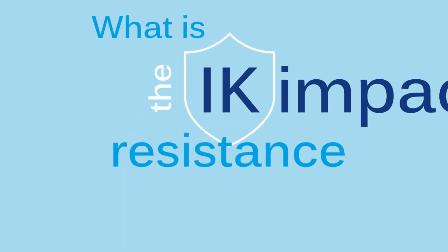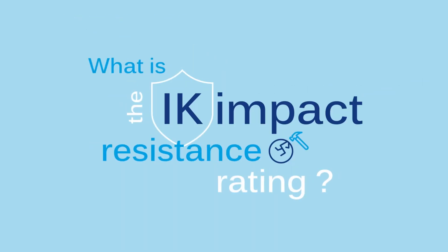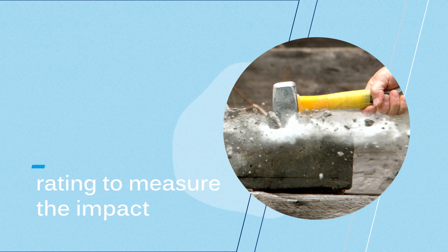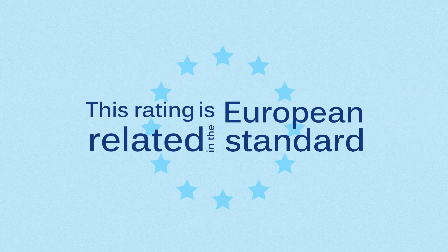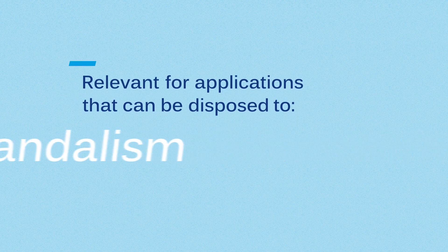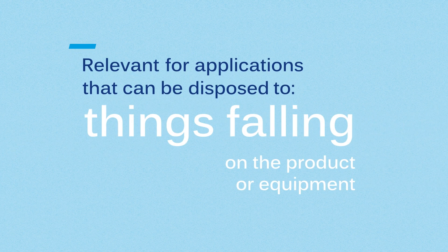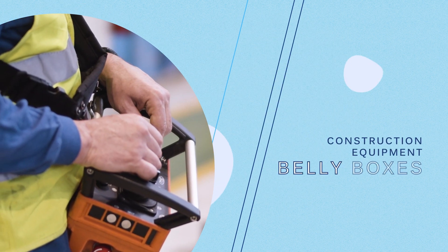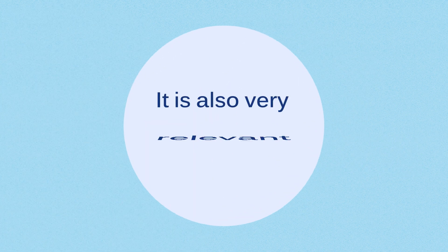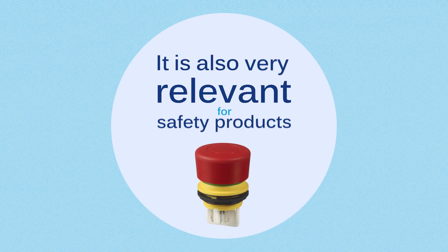The IK rating is a specific rating to measure the impact a product or equipment can handle. This rating is defined in a European standard and is relevant for applications exposed to vandalism, falls, or things falling on the product. These can be applications for public use, like parking ticket machines and bike rental stations, but also construction equipment, belly boxes, and safety products like e-stop switches.